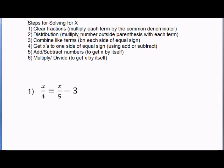Step 3: combine like terms on each side of the equal sign. Step 4: get x's to one side of the equal sign — use add and subtract to do this. Step 5: add and subtract numbers to get x by itself. Step 6: multiply or divide numbers to get x by itself.